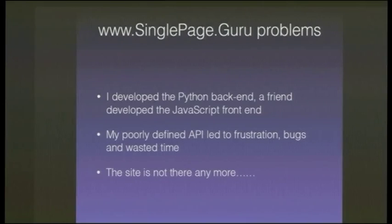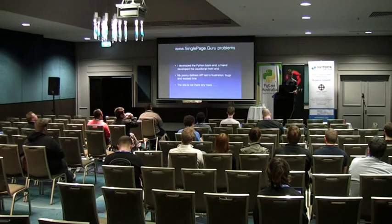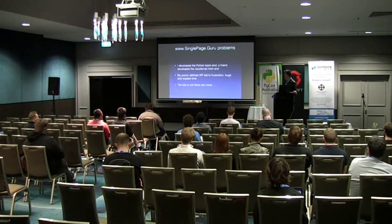To give you an understanding of where this has come from, I worked on a project about a year ago called Single Page Guru with a friend of mine. I developed the Python backend and he developed the JavaScript frontend. The API was kind of evolving as it went, and it was fairly poorly defined along the way, and that led to a lot of frustration, bugs and wasted time. My friend and I had a few tense moments as we had to deal with the fact that he kept having questions about the API, which seemed to be changing, and it wasn't clear exactly what was in the API.